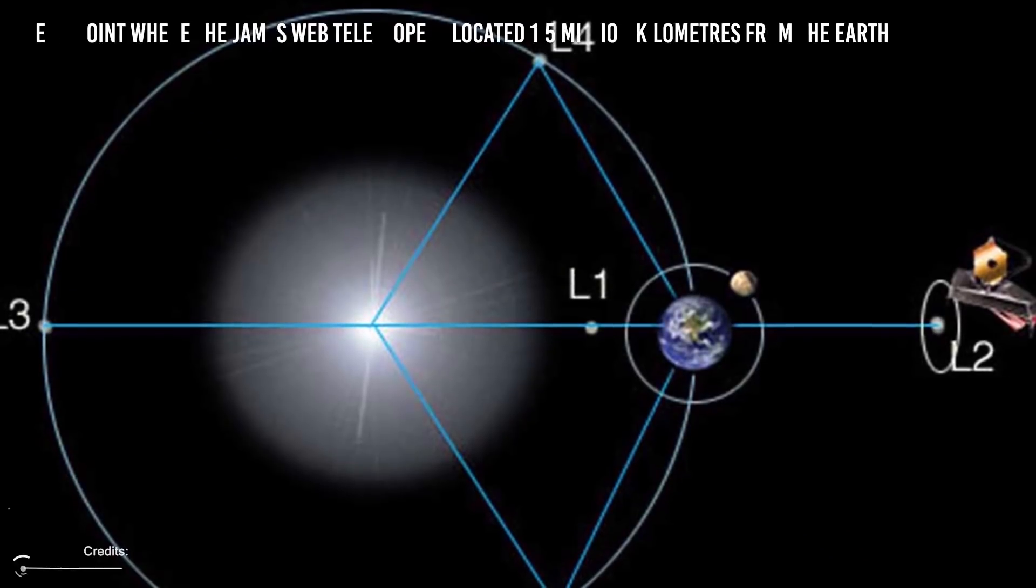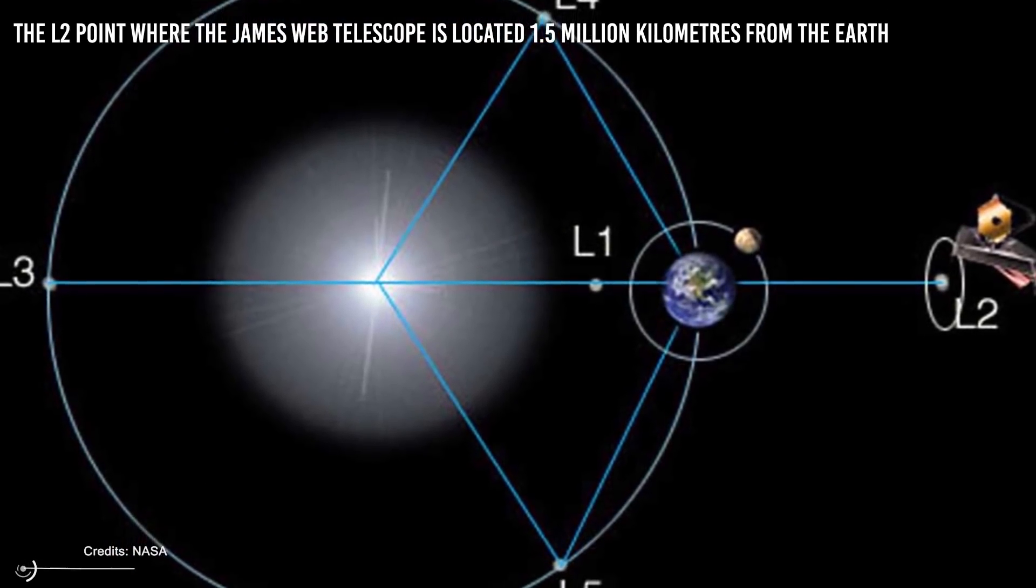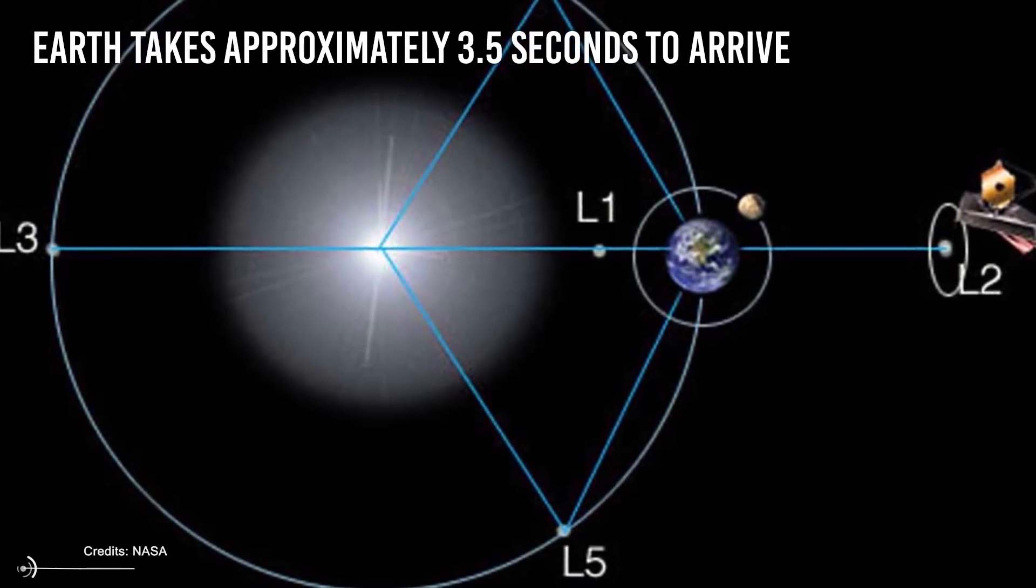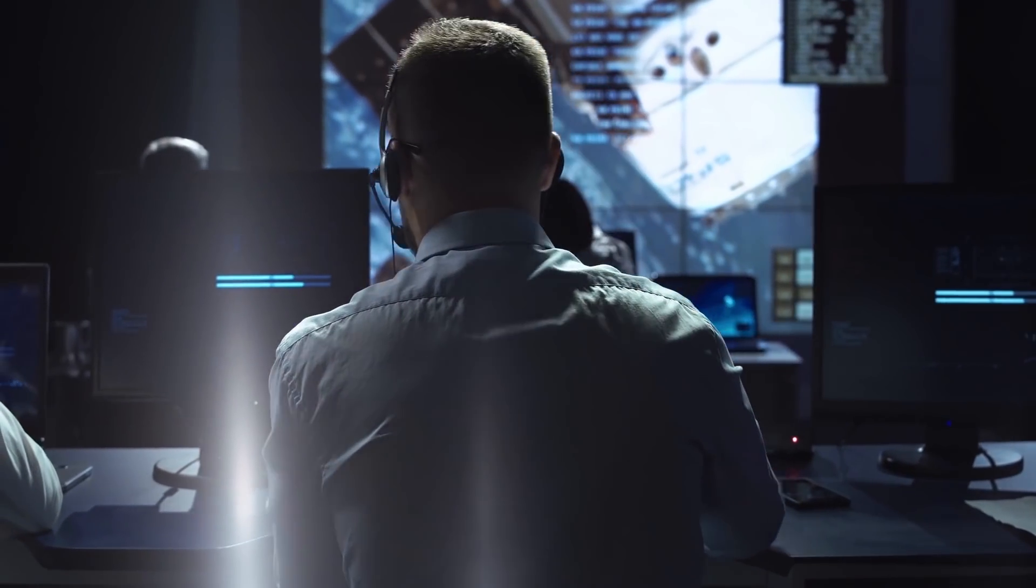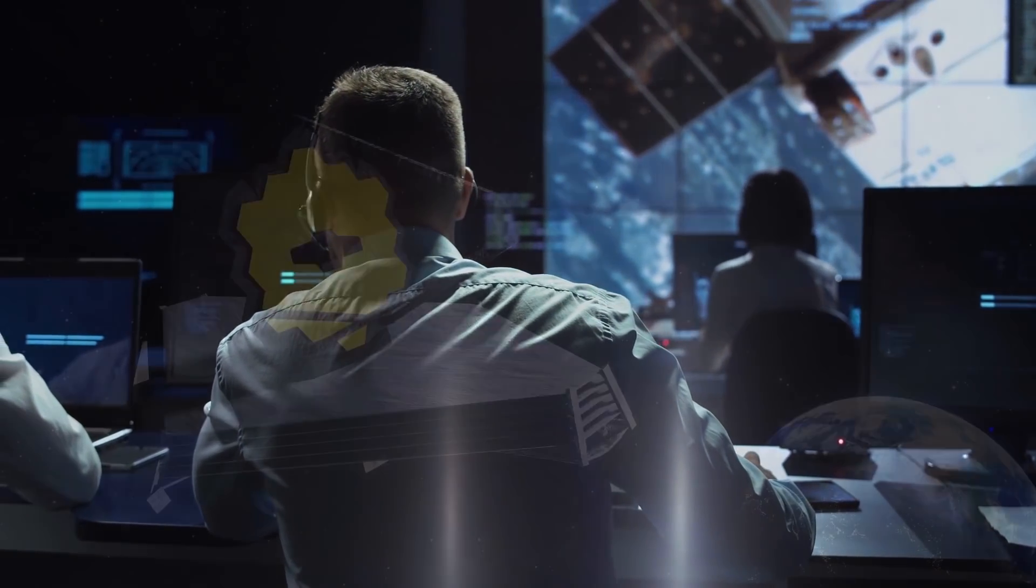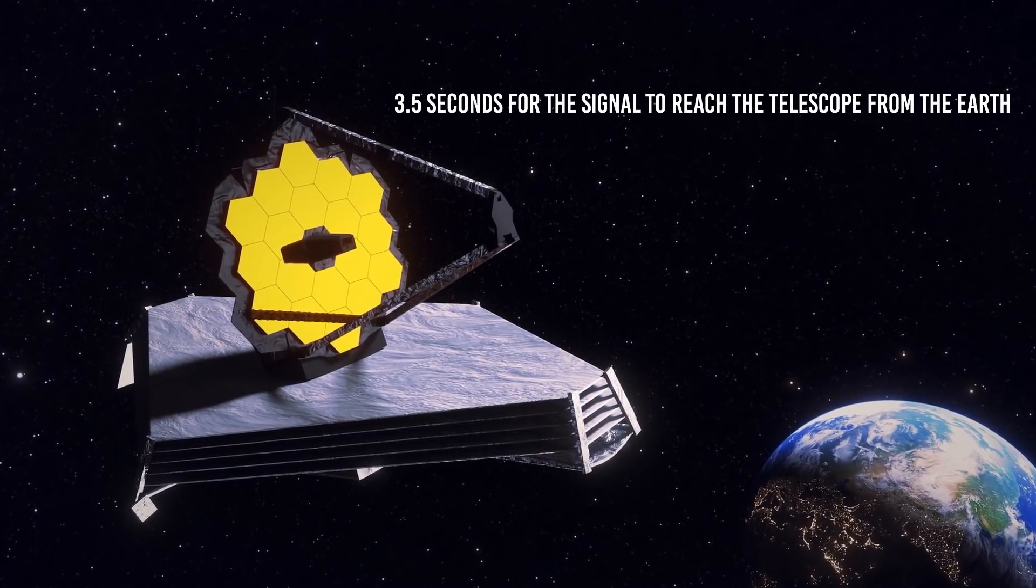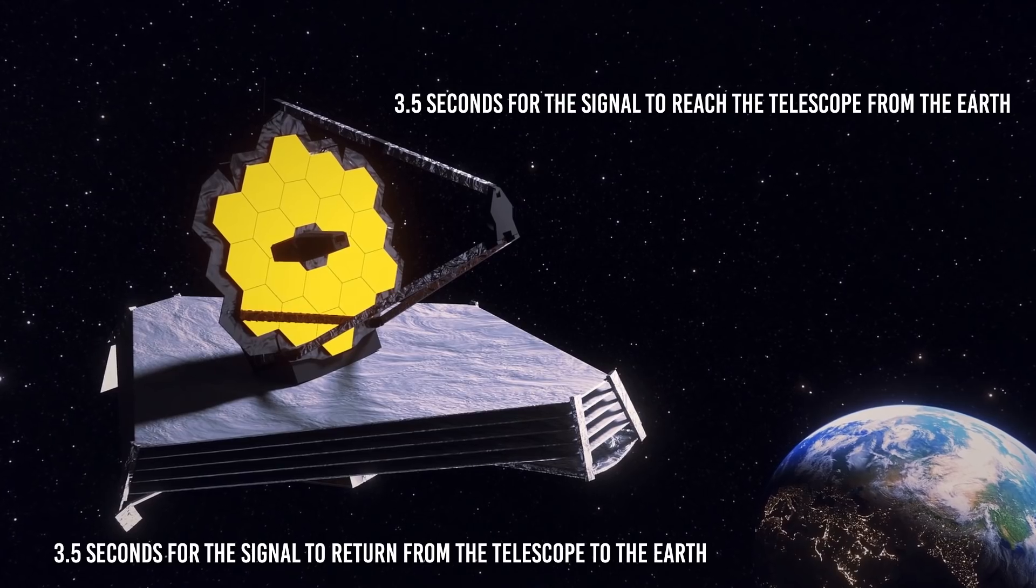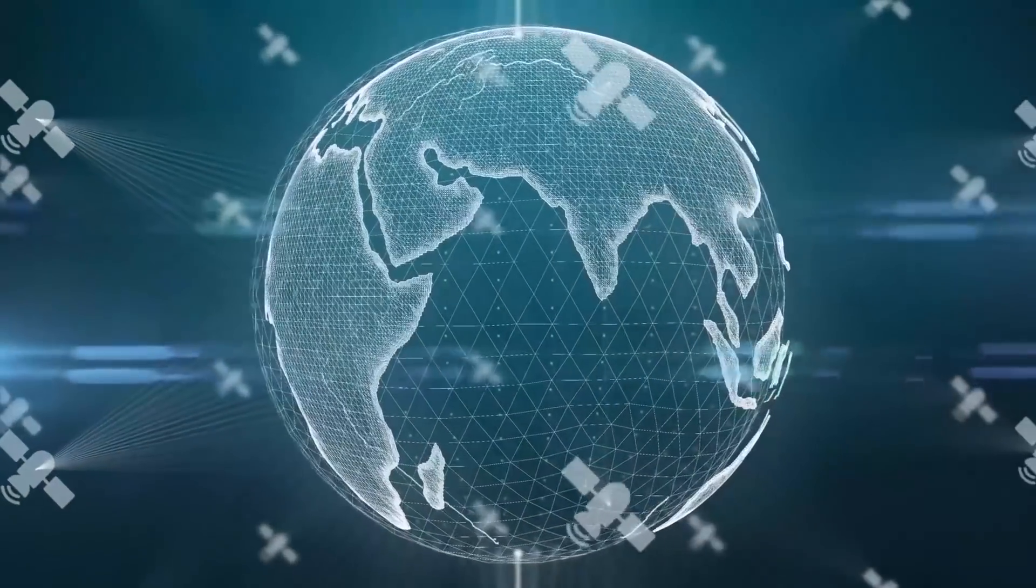The L2 point where the James Webb Telescope is located is 1.5 million kilometers from Earth, in the opposite direction to the Sun. The signal from the telescope to Earth takes approximately 3.5 seconds to arrive. A conversation between the control team and the telescope has a delay of only 7 seconds, since it's 3.5 seconds each way.